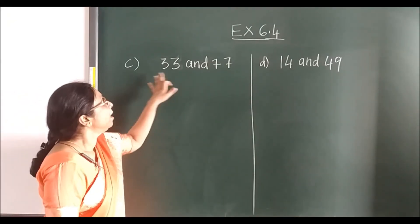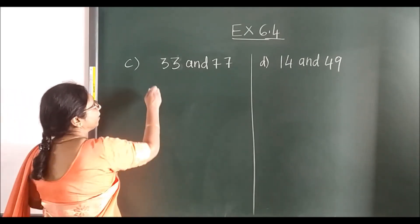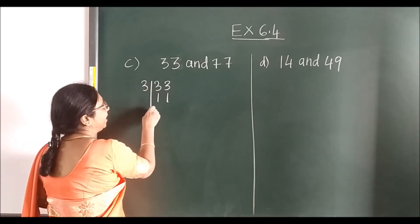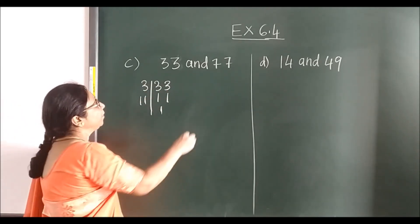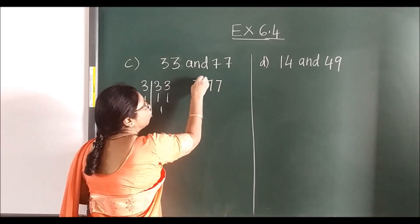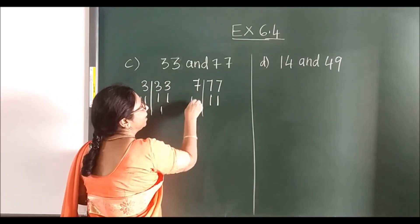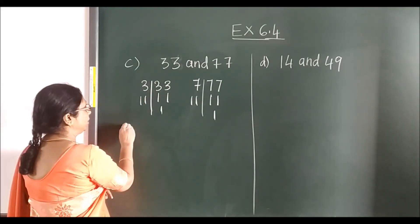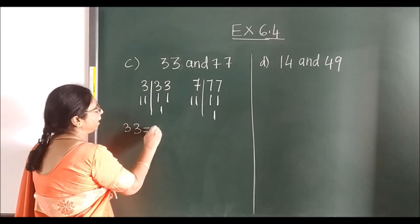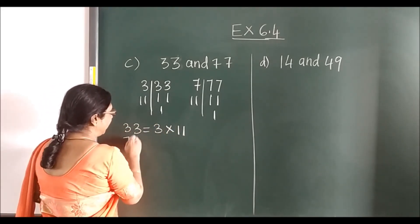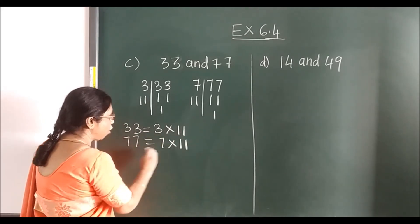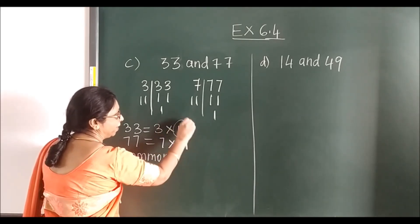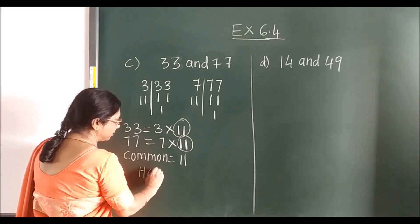See this sum — use prime numbers only. For 33: 3 elevens are 33, then 11 ones are 11. For 77: 7 elevens are 77, then 11 ones are 11. Prime factorization of 33 is 3 × 11; of 77 is 7 × 11. What is common? Common is 11. So HCF is 11.